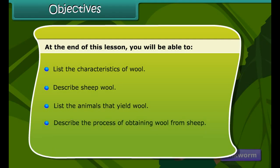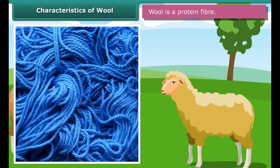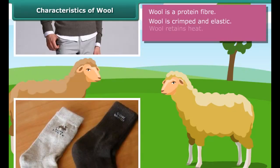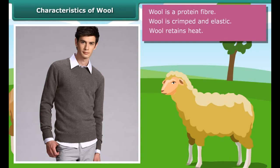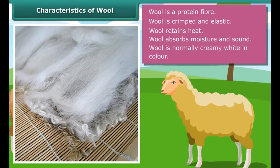At the end of this lesson, you'll be able to: list the characteristics of wool, describe sheep wool, list the animals that yield wool, describe the process of obtaining wool from sheep, and explain the processing of fibers into wool.